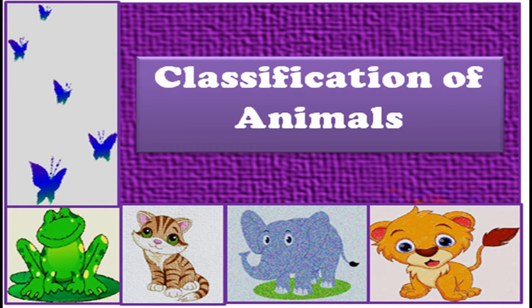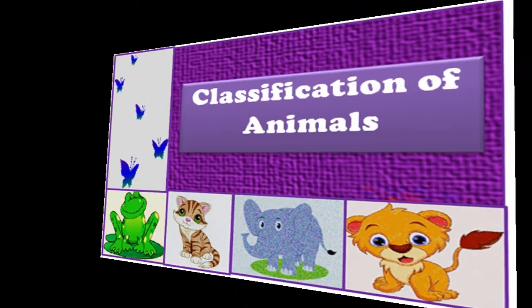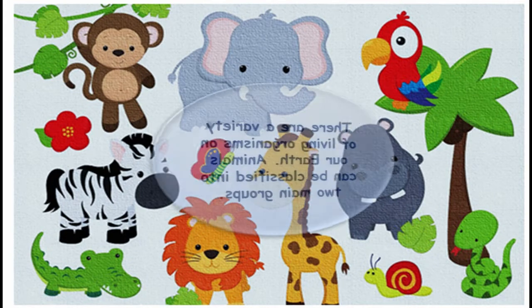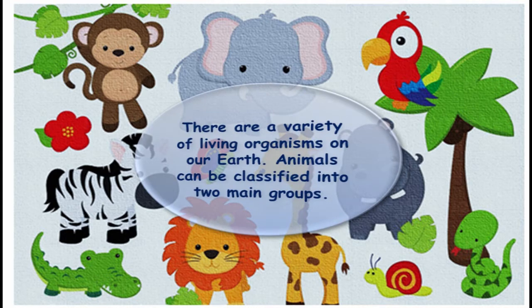Today we are going to classify animals. There are a variety of living organisms on our earth, and there are common features shared among animals. On the basis of these features, animals are classified into two main groups.